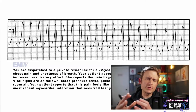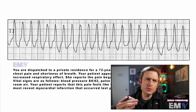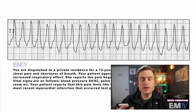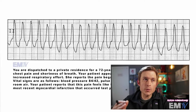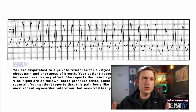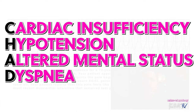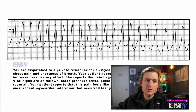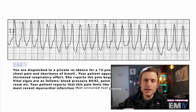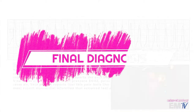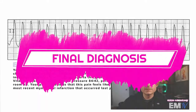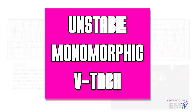As the vast majority of your points in static cardiology are scored by actually treating the rhythm correctly, we need to first identify whether or not this patient is stable or unstable so we can choose the side of the ACLS algorithm that we want to follow. For unstable criteria, I use the acronym CHAD, which stands for cardiac insufficiency, hypotension, alteration of mental status, and dyspnea. Based on this patient's presentation as well as their vital signs, I can confidently say that this patient is unstable. So my final diagnosis for static cardiology is going to be an unstable monomorphic VTach.